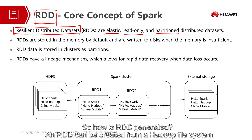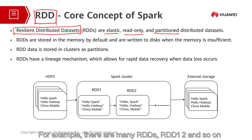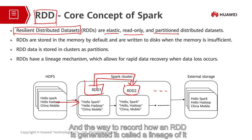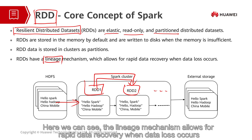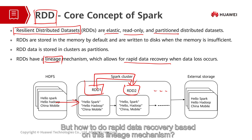So how is RDD generated? An RDD can be created from a Hadoop file system. Alternatively, an RDD can be converted from a parent RDD. For example, RDD1 is created from HDFS, and RDD1 is the parent to generate RDD2. The way to record how an RDD is generated is called the lineage of it. The lineage mechanism allows for rapid data recovery when data loss occurs. That is why we say it guarantees the high stability of Spark.